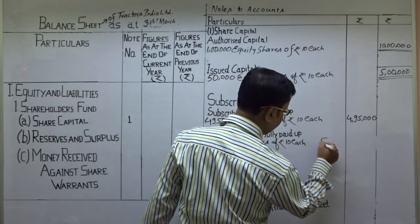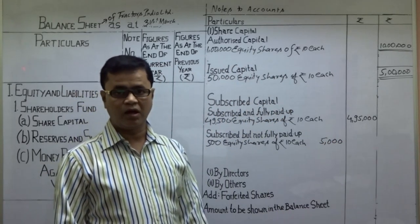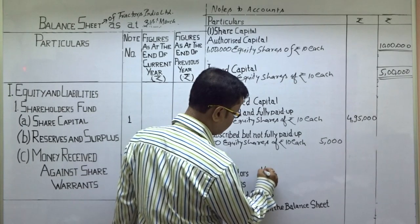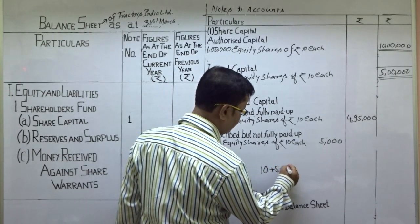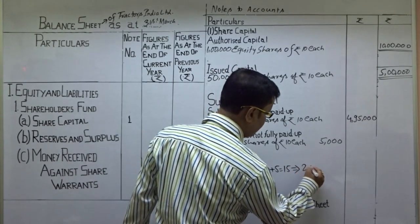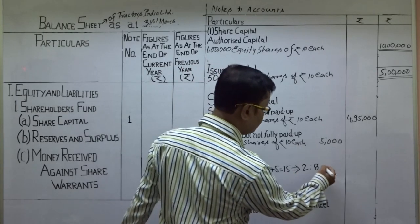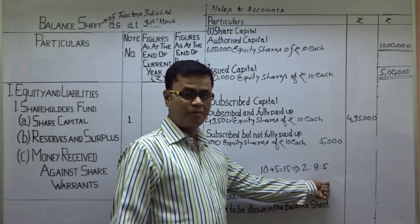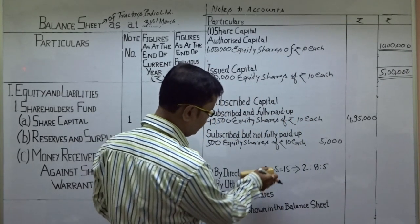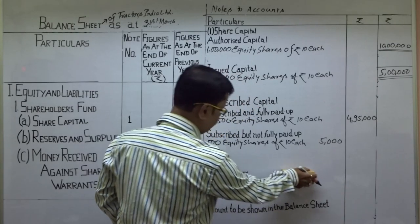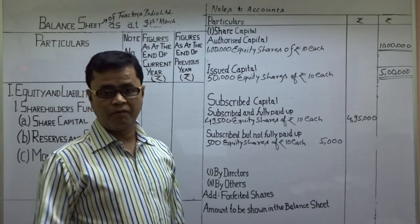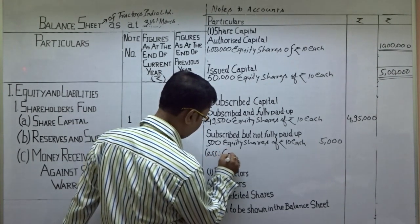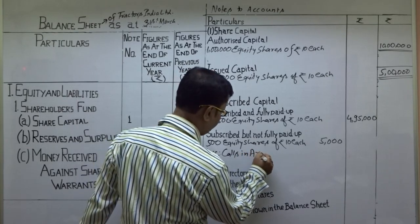Final call की amount कैसे निकालते हैं — एक share था 10 रुपए का, 5 रुपए premium — यानि company का पूरा share 15 rupees का हो गया। Company ने 15 rupees में से 2 rupees application, 8 rupees allotment including premium — remaining balance 5 rupees बचा। यानि first and final call 5 rupees का होगा। उसने 5 rupees की payment नहीं की — तो call in arrears: 500 into 5 = 2,500।